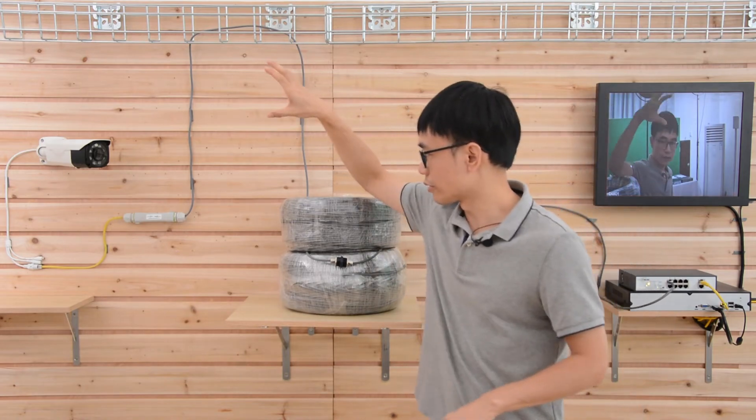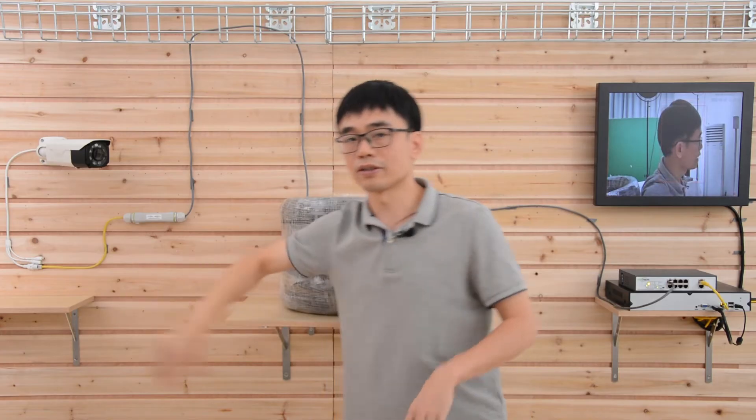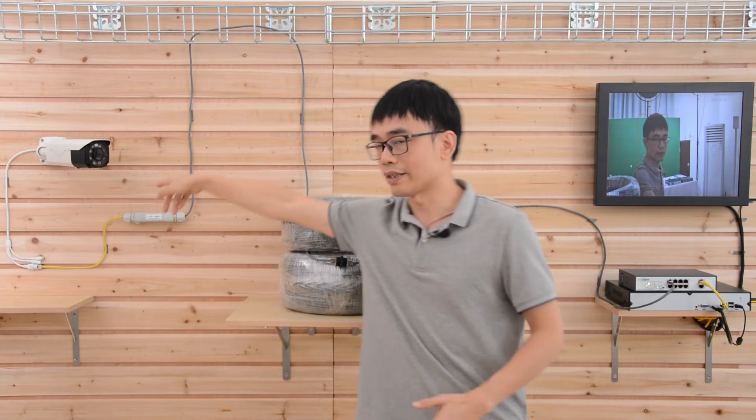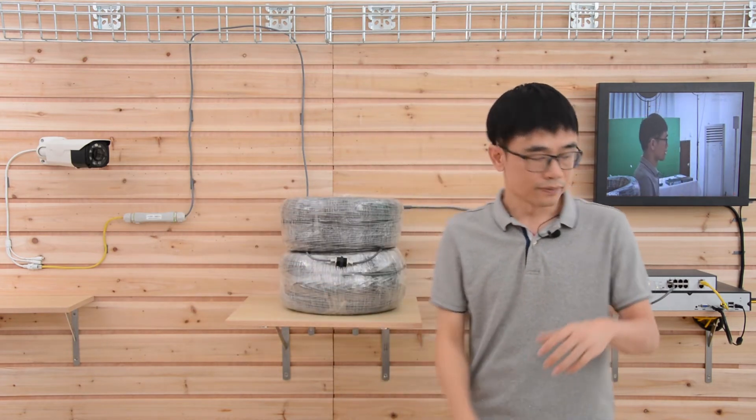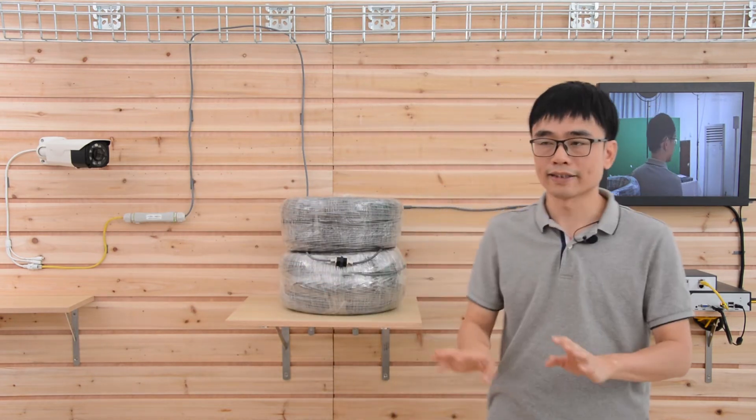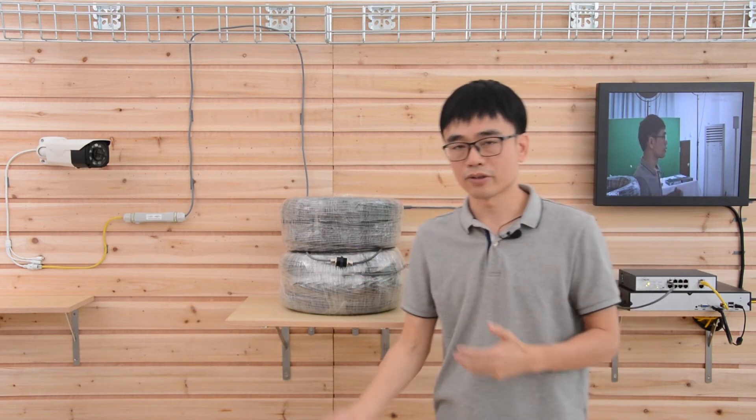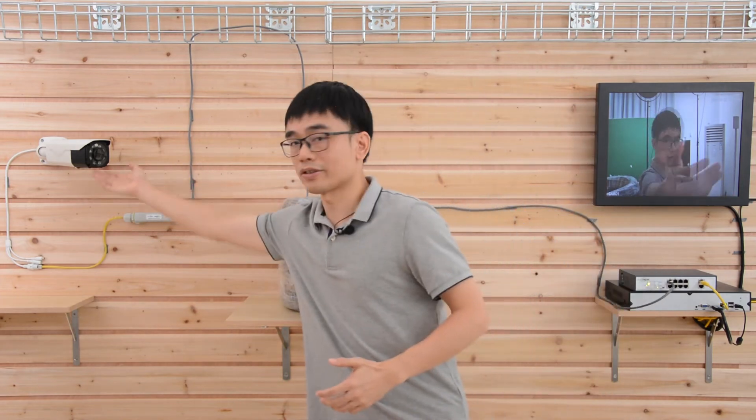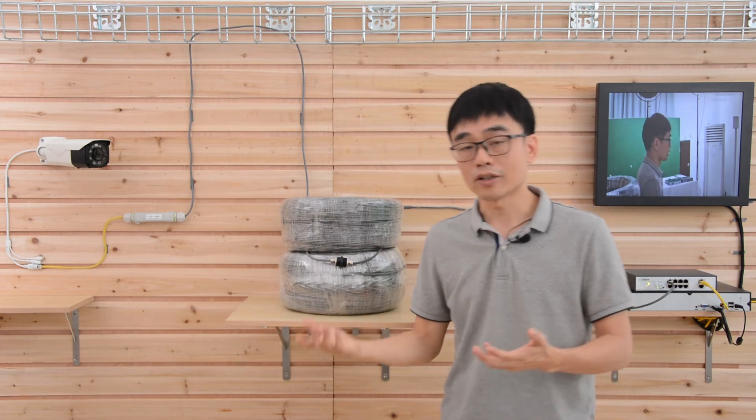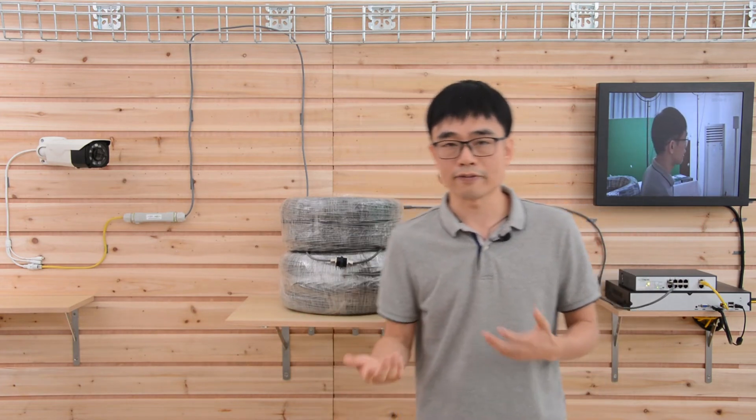But now let's talk about this PoE extender. Why we still need one PoE extender next to the camera. You see, the long run PoE switch can supply long run data up to 2500 feet. But for this one, it's just a regular camera. The data only can reach about 328 feet.